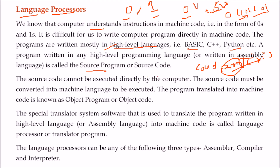This source code cannot be directly executed by the computer. High-level language code has to be converted to machine language. The program that results after this translation is called object code or object program. We have special translator system software used to translate programs written in high-level language into machine code.